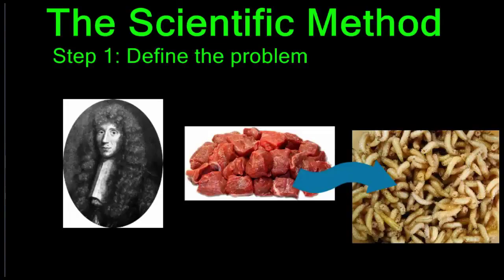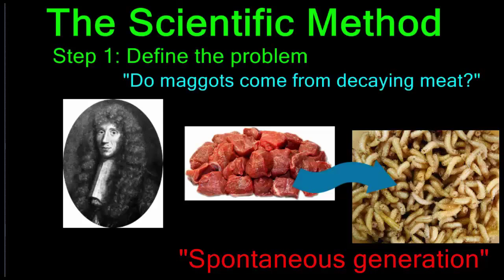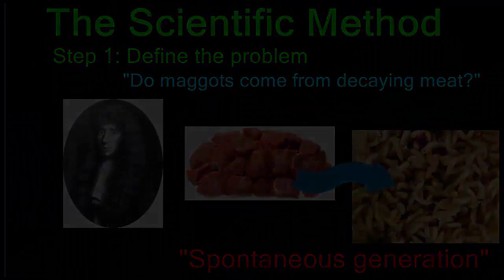In the time of Francesco Redi, people thought that living things could come from non-living things. For example, maggots — which are small worm-like bugs — could come from decaying meat. This idea is known as spontaneous generation. Redi knew that was not true, so he decided to test this idea with an experiment. He started the scientific method by defining his problem: do maggots come from decaying meat?